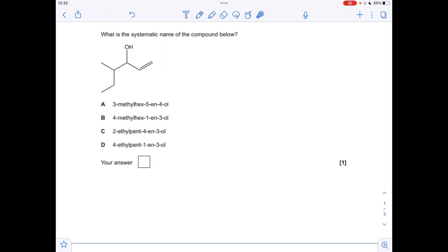Next one. What's the systematic name for this compound? First thing we'll do is establish the longest continuous carbon chain: one, two, three, four, five, six. So it's going to be a hexene of some description. The double bond is at the start of the chain, so it's a hex-1-ene. We've got an OH group at carbon number three, so it's a 3-ol.